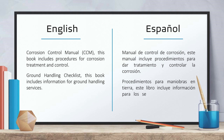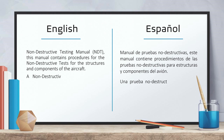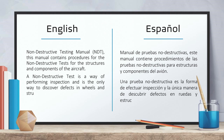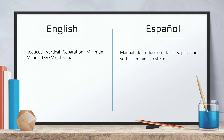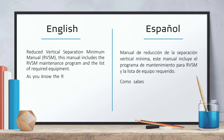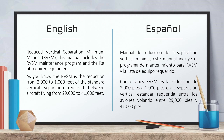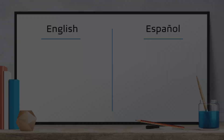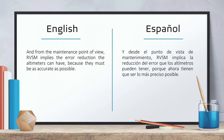Ground handling checklist — this book includes information for ground handling services. Non-destructive testing manual — this manual contains procedures for the non-destructive tests for the structures and components of the aircraft. A non-destructive test is a way of performing inspection and is the only way to discover defects in wheels and structures, to mention just a few examples. Reduced vertical separation minimum manual — this manual includes the RVSM maintenance program and the list of required equipment. The RVSM is the reduction from 2,000 to 1,000 feet of the standard vertical separation required between aircraft flying from 29,000 to 41,000 feet. From the maintenance point of view, RVSM implies the error reduction the altimeters can have, because they must be as accurate as possible.